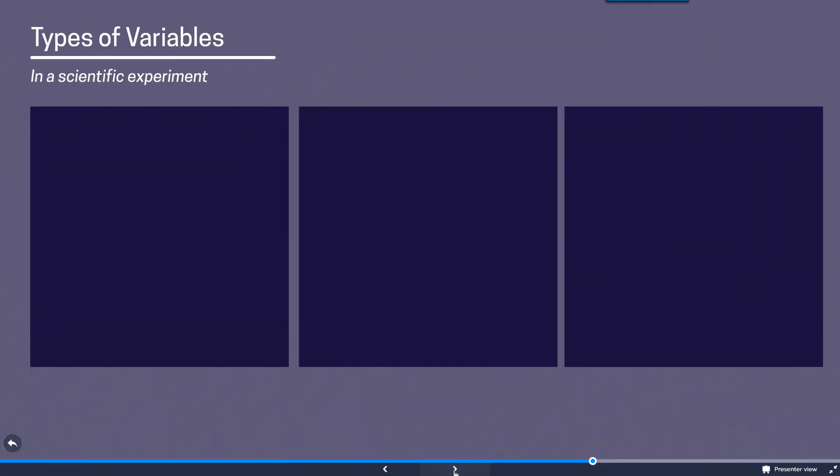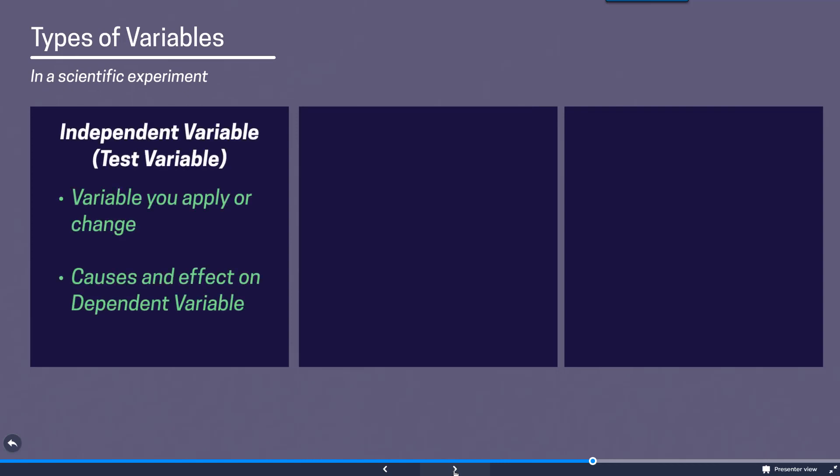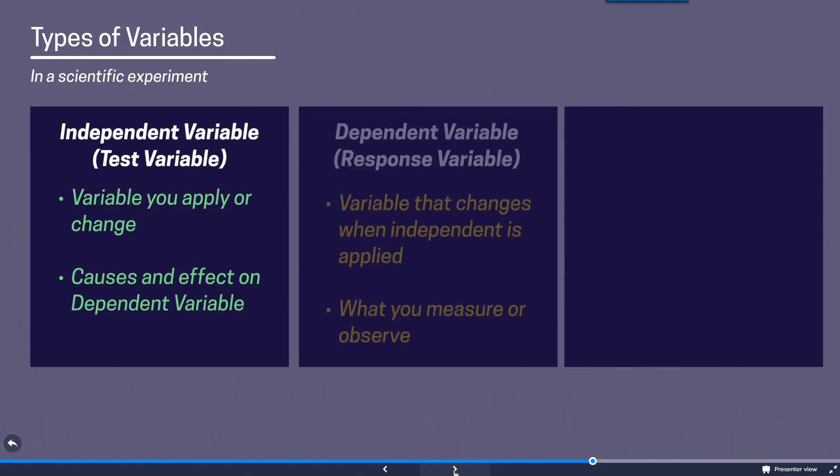So if we take a look at the types of variables we tend to find in a scientific experiment. First up is our independent variable or our test variable. This is going to be the variable that you apply or change in your experiment. And typically speaking we expect that it will cause an effect on the dependent variable.